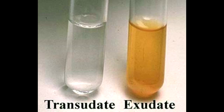Name all the features of transudate. In transudate, because the fluid goes through tight blood vessels, cells are not able to go through. Therefore it's going to be hypocellular. There is also low protein content and low specific gravity of less than 1.012.